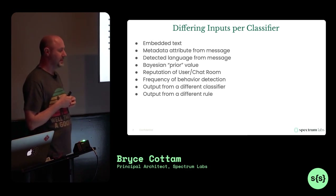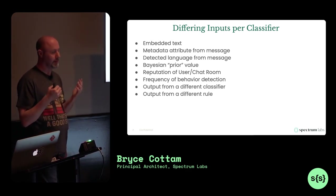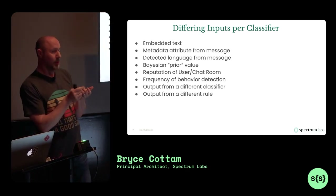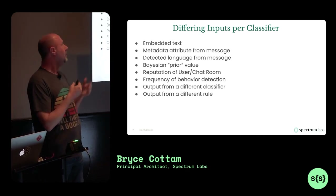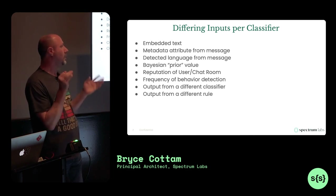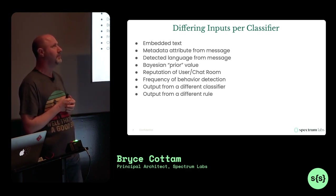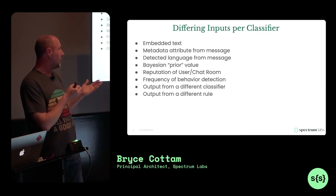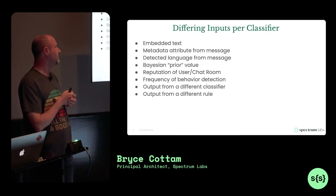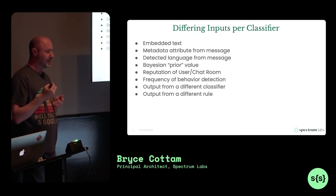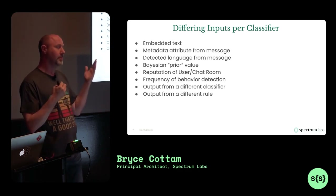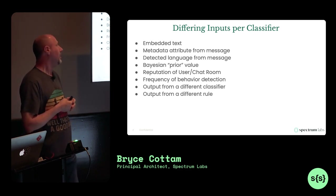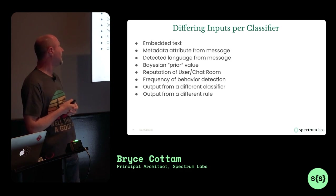By far the most common input is embedded text — a vector representing a word in a sentence, usually 200 or 700 32-bit floats per word. There's also metadata from the message that a classifier can consume, like the time a message was sent. Other inputs include language and Bayesian priors.